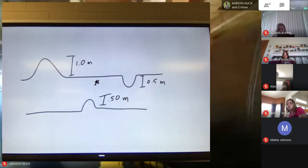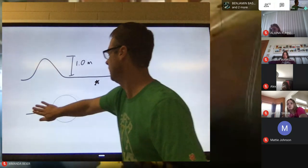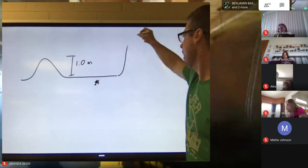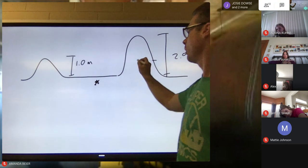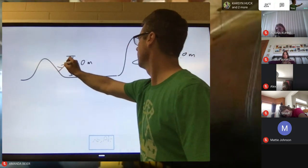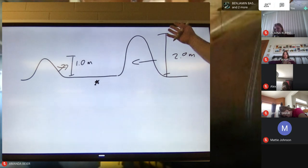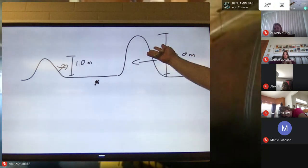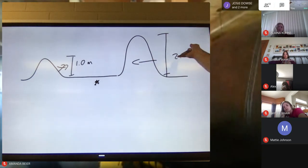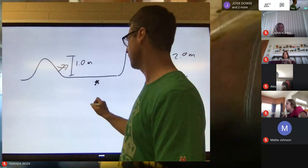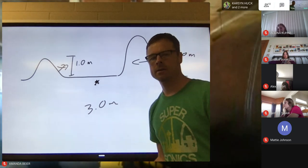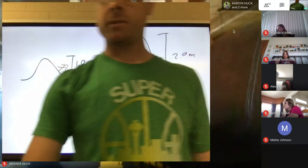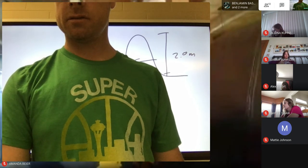We can change that problem to constructive interference: one wave is 2 meters and another is 1 meter, both above the equilibrium position, approaching each other. What is the amplitude when they intersect? That's constructive interference — the amplitude is 2 plus 1, which is 3 meters above the equilibrium position. Easy math.